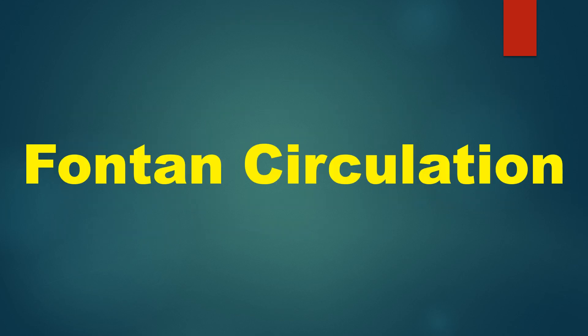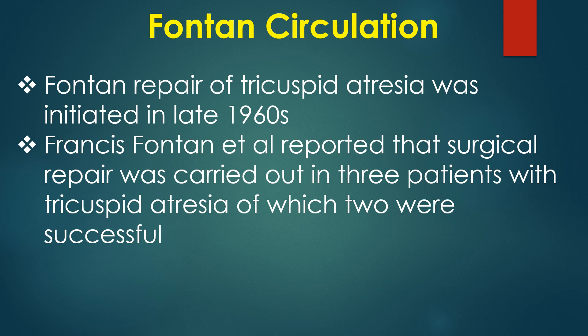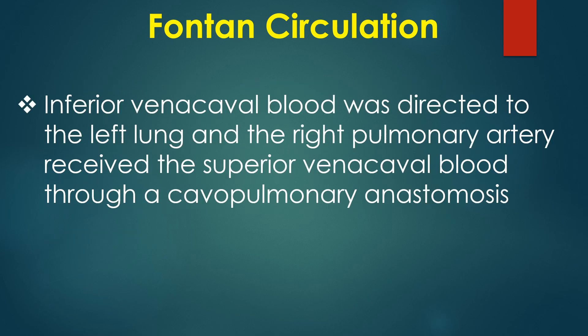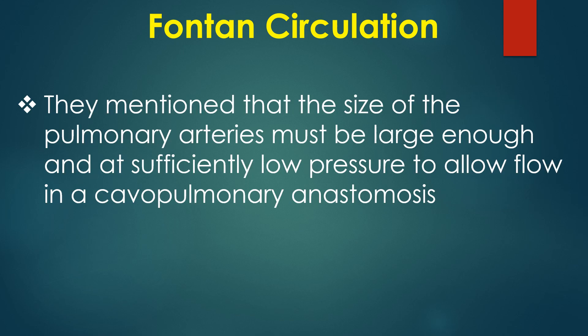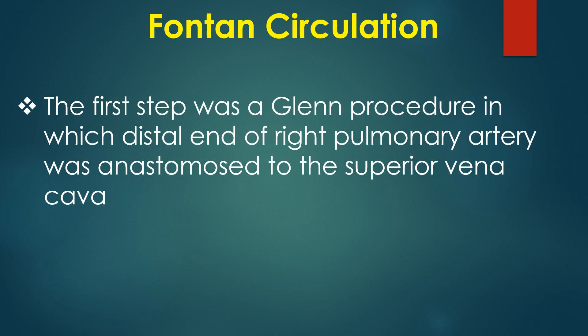Discussion on Fontan circulation. Fontan repair of tricuspid atresia was initiated in the late 1960s. Francis Fontan and associates reported surgical repair in three patients with tricuspid atresia, of which two were successful. Inferior vena caval blood was directed to the left lung and the right pulmonary artery received superior vena caval blood through a cavopulmonary anastomosis. They noted that the size of the pulmonary arteries must be large enough and at sufficiently low pressure to allow flow in a cavopulmonary anastomosis.